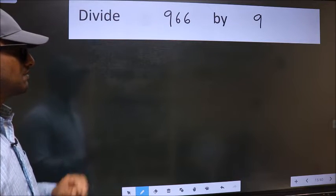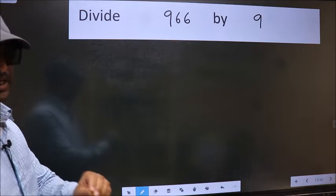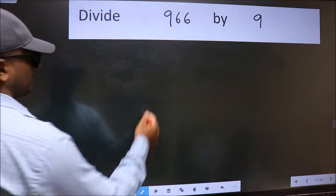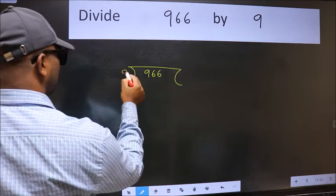Divide 966 by 9. To do this division, we should frame it in this way. 966 here and 9 here.